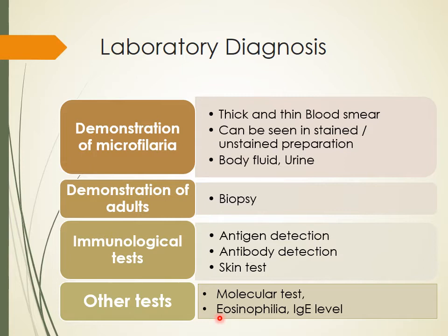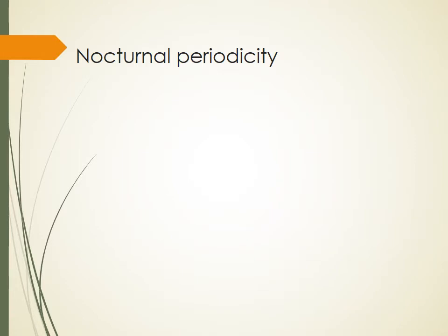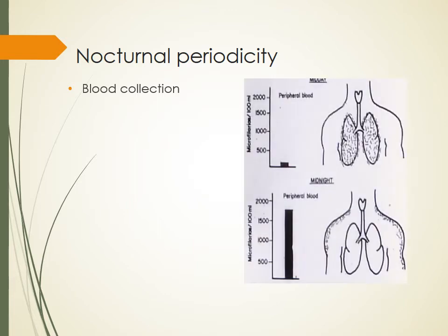Marked eosinophilia is a very important finding for diagnosis, and a raised IgE level also helps. One important concept from the first lecture is nocturnal periodicity, which is specifically valid for W. bancrofti. When collecting blood, you must be aware that microfilaria remains in the capillaries of internal organs during the daytime and is not found in the peripheral blood. During the night — which is the routine biting time of its vector, Culex mosquito in India — microfilaria comes out into the peripheral blood.